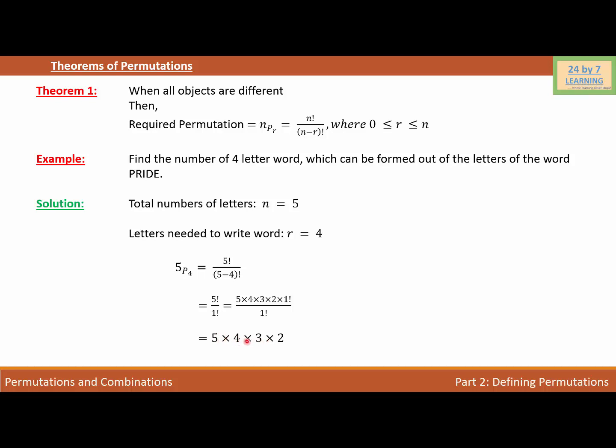So if we multiply all these numbers, we will get 120. It simply means that we can create 120 words using 4 letters at a time out of these 5 letters that we have in the word PRIDE.